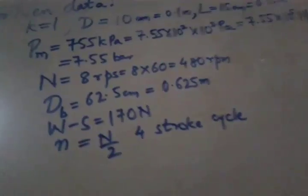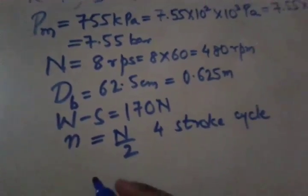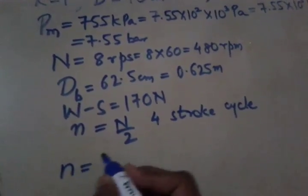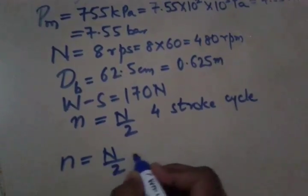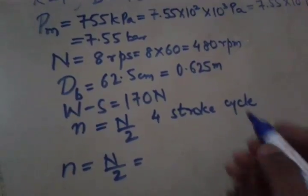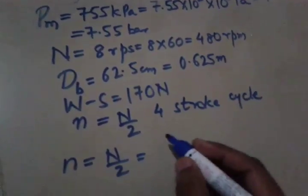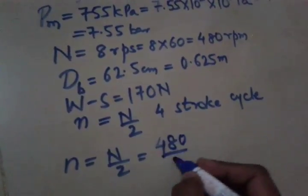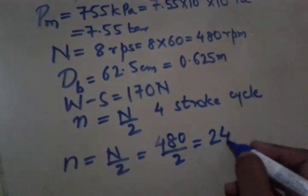So now to start with, first we will calculate small n. Small n is equal to N by 2 and N is given as 8 RPS which we have calculated into RPM as 480. So this will be 480 divided by 2 that is 240.